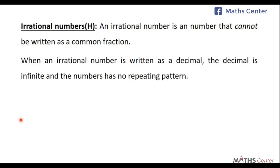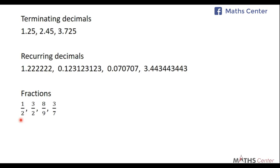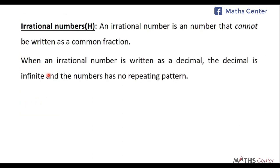When an irrational number is written as a decimal, the decimal is infinite and the numbers have no repeating pattern. Unlike rational terminating decimals which end, or recurring decimals which have a common repeating pattern, irrational numbers written as decimals are infinite with no repeating pattern.